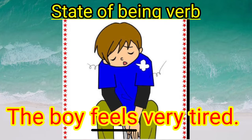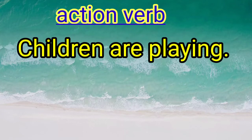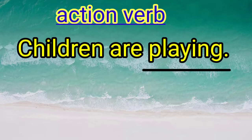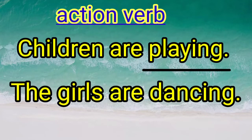Now let's look at some sentence examples of action verbs. Children are playing — what is the action performed by the children? It is playing, so playing is an action verb. The girls are dancing — what is performed by the girls? It's dancing, so dancing is an action verb.